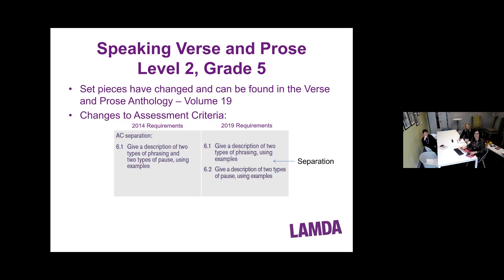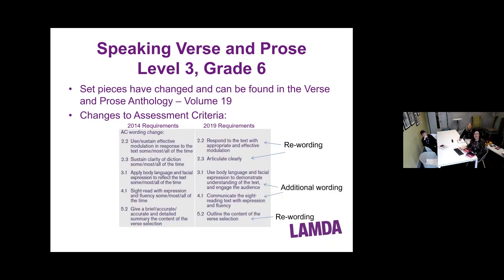For Grade 5, phrasing and pausing have been separated to give learners a fairer opportunity to meet the assessment criteria and give examiners greater ability to provide accurate feedback. For Grade 6, we've reworded the assessment criteria for modulation and clarity of diction. We've added into 3.1 the use of body language and facial expression — learners must use their body and facial expression to demonstrate an understanding of the text and engage the audience, as that's what we're looking for at this level.